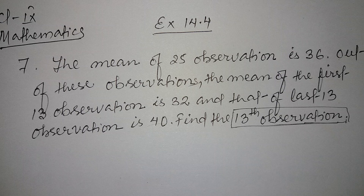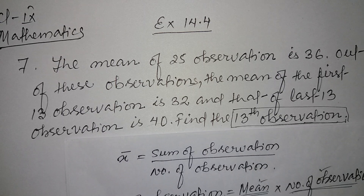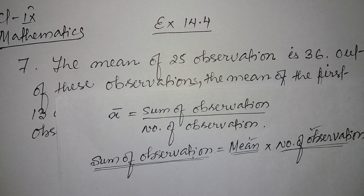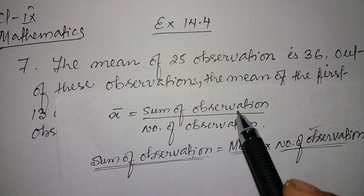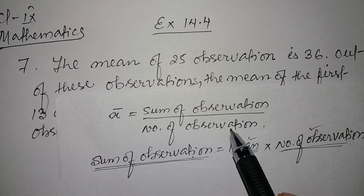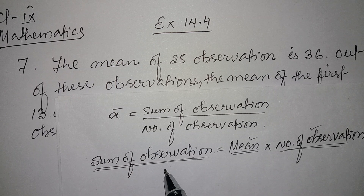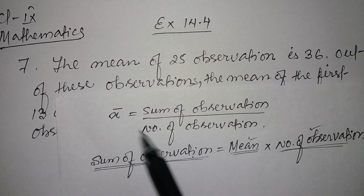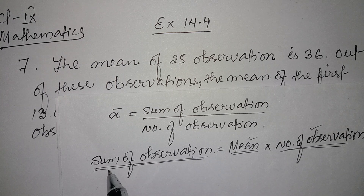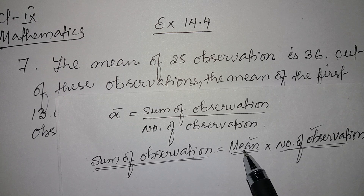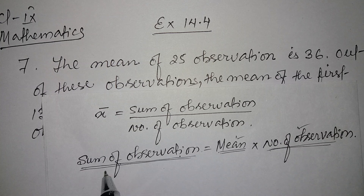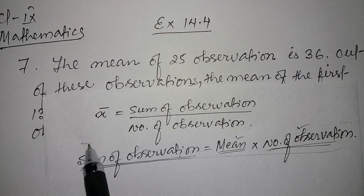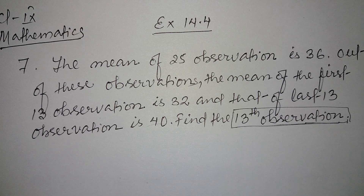As you have seen, mean is equal to sum of observations divided by number of observations. If you cross multiply, you get that the sum of observations is equal to mean into number of observations. This is the formula we're going to use here.